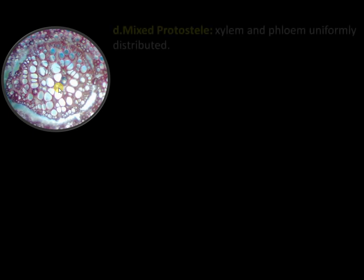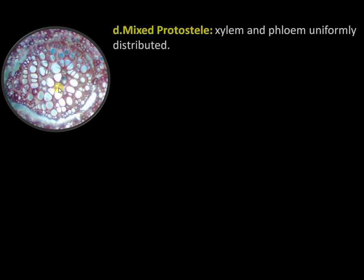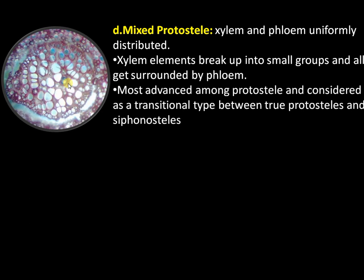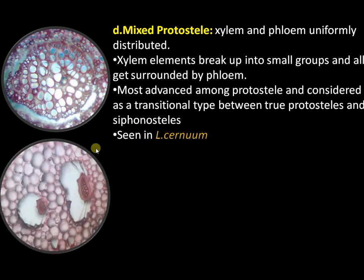The fourth type is the mixed protostele. Here the xylem and phloem are seen as small strips; the xylem is very much fragmented and embedded in the phloem tissue. The xylem and phloem are uniformly distributed, and this is much more advanced than the plectostele. It is considered a transitional type between true protostele and siphonostele, and is present in Lycopodium serratum.